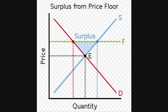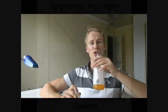A price floor set above the market equilibrium price has several side effects. Consumers find they must now pay a higher price for the same product. As a result, they reduce their purchases or drop out of the market entirely. Meanwhile, suppliers find that they are guaranteed a new and higher price than they were willing to charge before. As a result, they increase production.